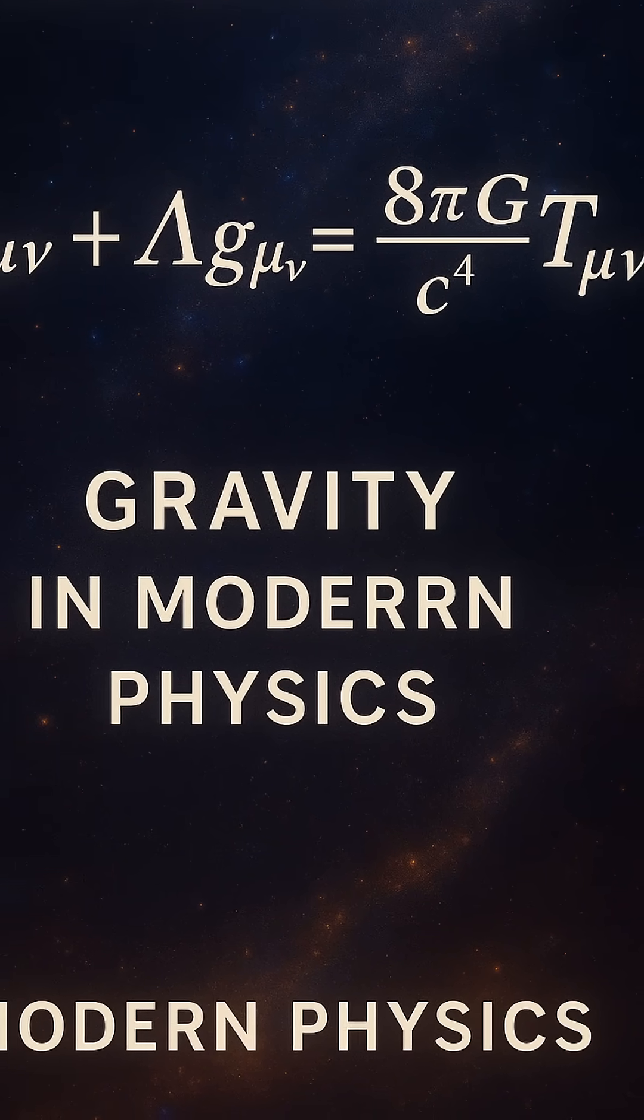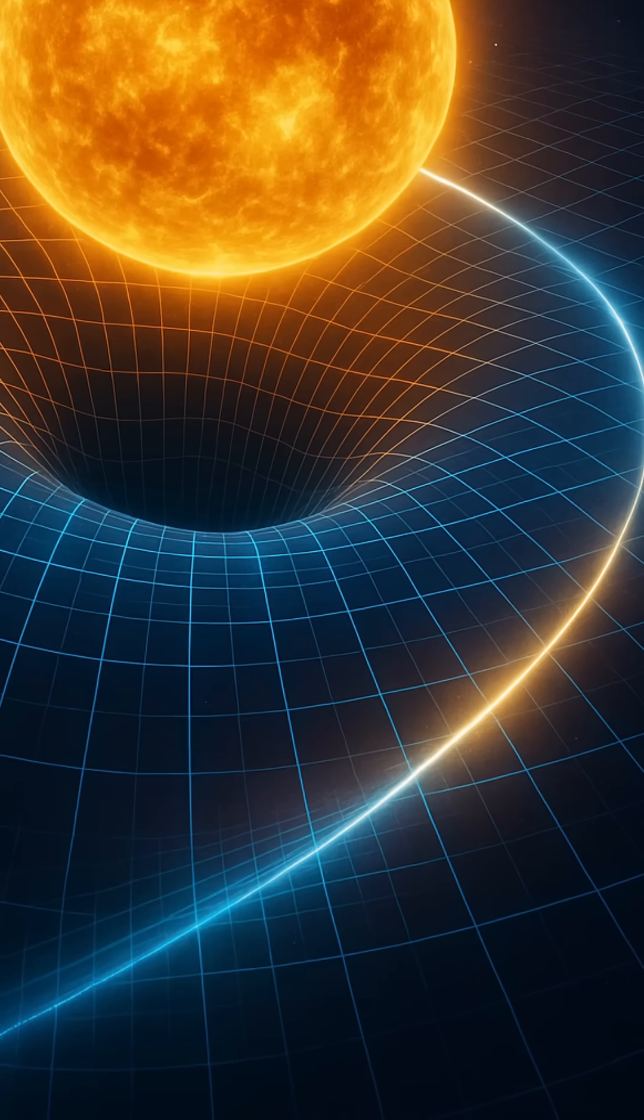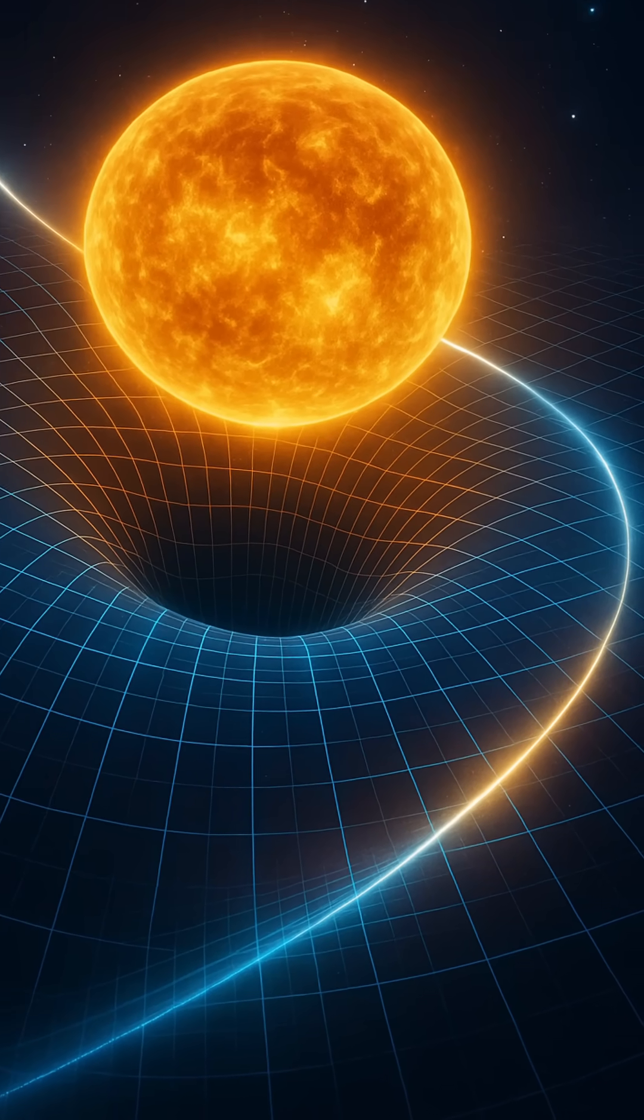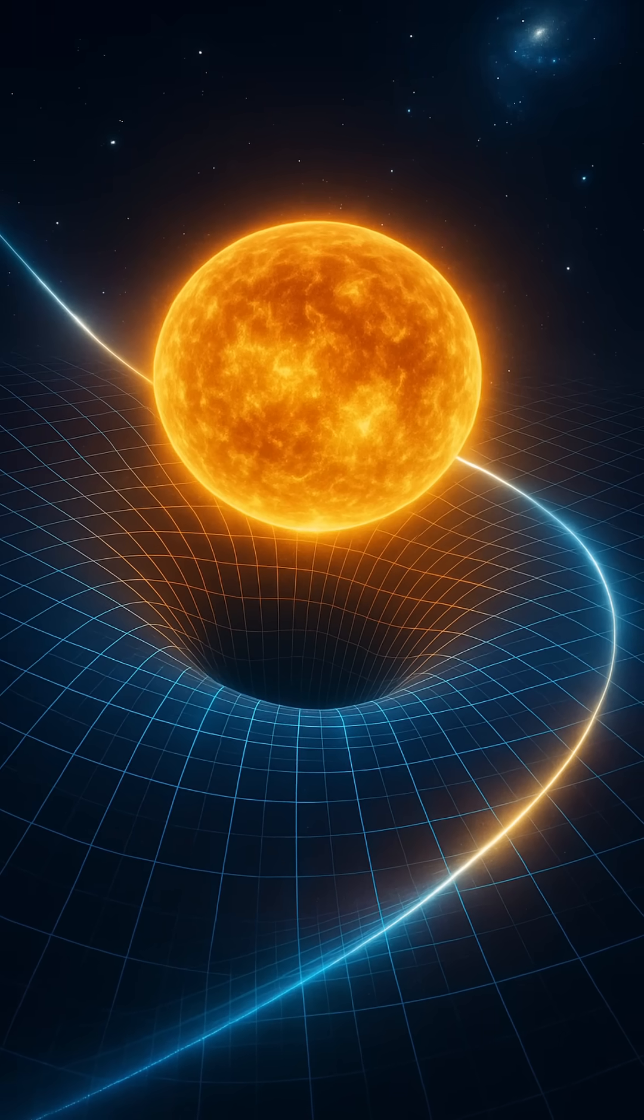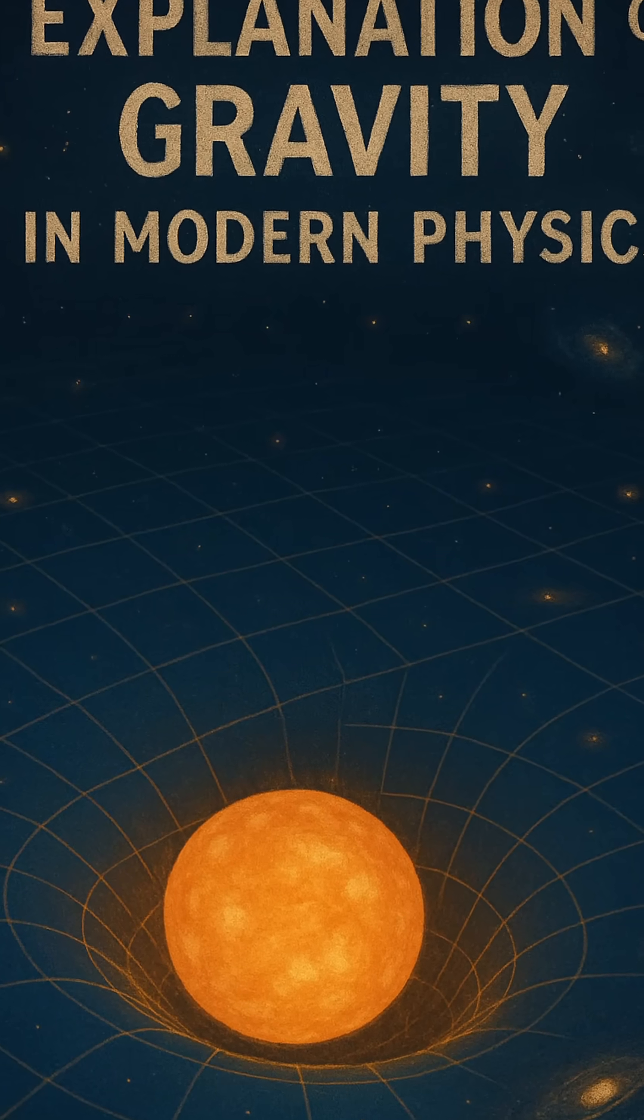It explains why light bends when it passes near a star, a phenomenon called gravitational lensing. It accounts for the way time slows down near massive objects, a key principle behind technologies like GPS. It even predicted the existence of black holes and gravitational waves, both of which have now been observed.